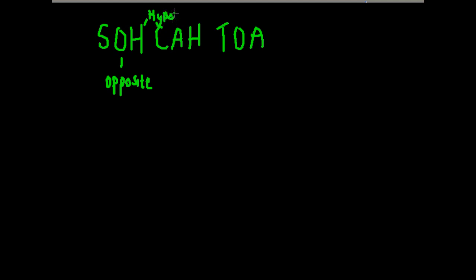C stands for cosine, and that's adjacent over hypotenuse. So H is for hypotenuse, O for opposite, A for adjacent.